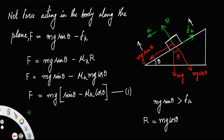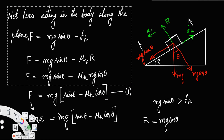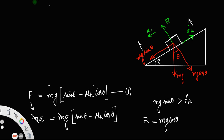According to Newton's law, this force equals mass times acceleration. So m times a is equal to mg times (sin theta minus mu_k cos theta). Cancelling m from both sides, the expression for acceleration is: a is equal to g times (sin theta minus mu_k cos theta).